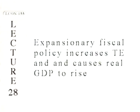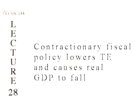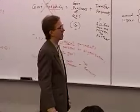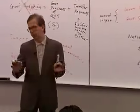An expansionary policy causes an increase in real GDP, while a contractionary policy causes a reduction in real GDP. Those terms refer to how a policy affects the economy's output.